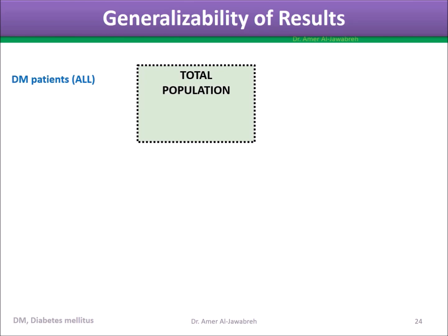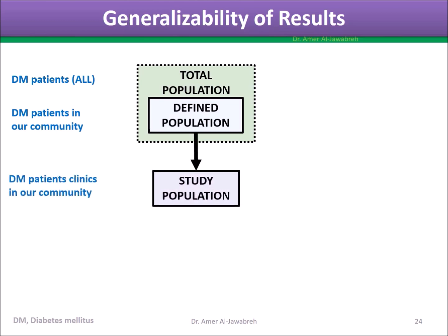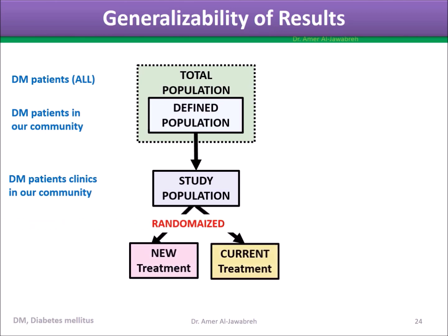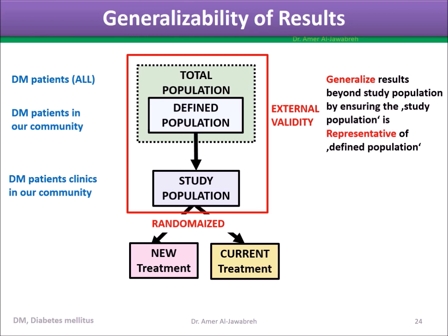Generalizability of results: total population refers to all DM patients; defined population refers to DM patients in our community. External validity means generalizing results beyond the study population by ensuring the study population is representative of the defined population.